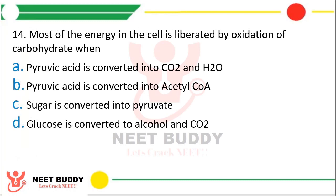Question 14: Most of the energy in the cell is liberated by oxidation of carbohydrates when — option A pyruvic acid is converted to CO₂ and water, option B pyruvic acid is converted to acetyl-CoA, option C sugar is converted to pyruvate, or option D glucose is converted to alcohol and CO₂. The correct answer is option A — when pyruvic acid is converted to carbon dioxide and water.